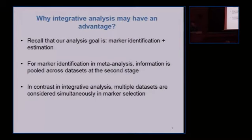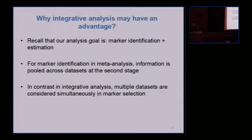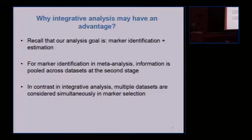A very natural question is why do we want to do something different, and why integrative analysis may have some advantage over meta-analysis? Our goal is marker identification. When you think about meta-analysis for marker identification, you do 10 separate marker identifications and then combine results. For integrative analysis, you take multiple datasets into consideration simultaneously in just one single step, and by pooling information at an early stage you may gain increased information.